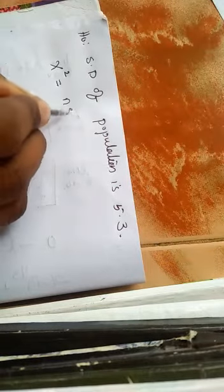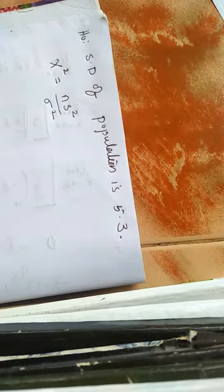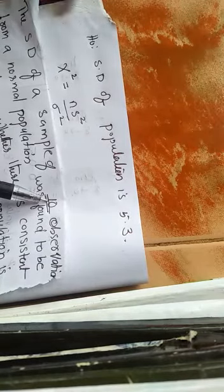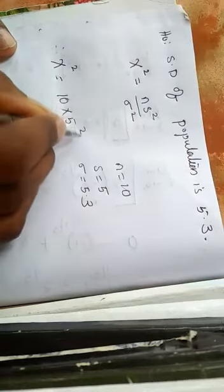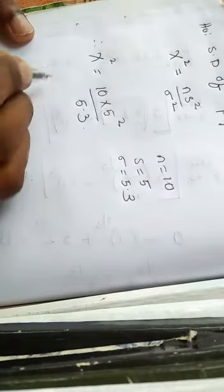Next, we need to find the chi-square statistic. In the case of testing population variance, the chi-square statistic is ns² divided by σ². Here n is the number of sample observations, that is 10. So n = 10, sample standard deviation s = 5, and population standard deviation σ = 5.3. Therefore, chi-square statistic = 10 × 5² divided by 5.3² = 10 × 25 divided by 28.09. Calculating this value, we get 8.9.